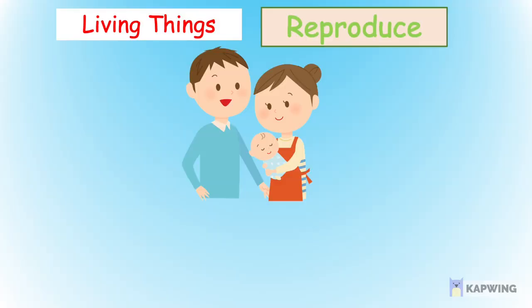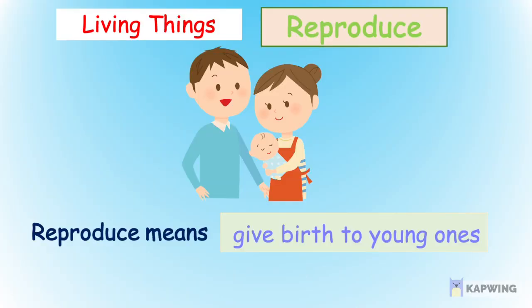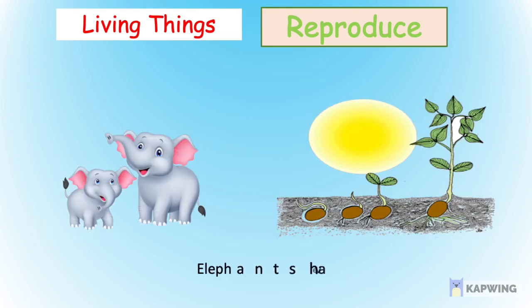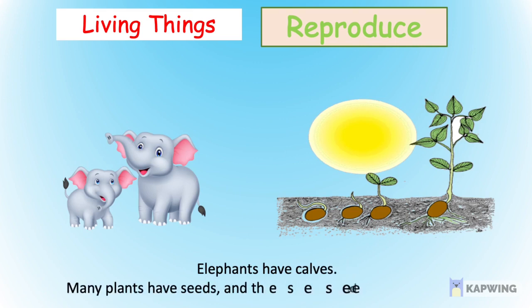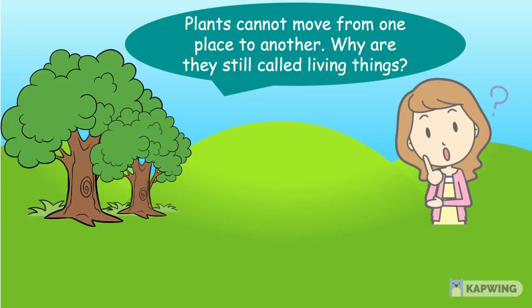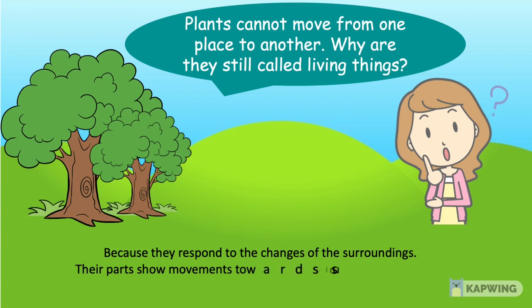Living things reproduce. Reproduce means give birth to young ones. For example, people have babies, elephants have calves, and many plants have seeds and these seeds grow into new plants. Plants cannot move from one place to another. Why are they still called living things? Because they respond to the changes of the surroundings. Their parts show movements towards sunlight, warmth and support.